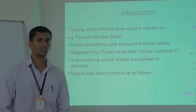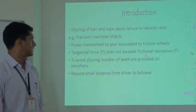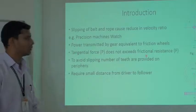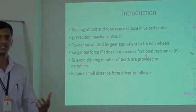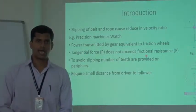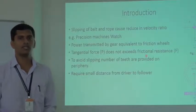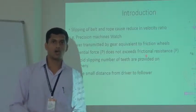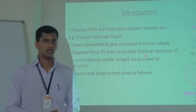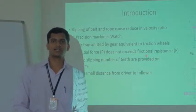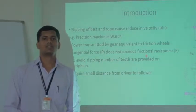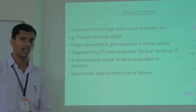First of all, Introduction of Gears. We are going to use gears because slipping of belts and ropes causes reduction in velocity ratio. For example, if we are moving in a vehicle and after acceleration our automobile starts slipping, that will cause loss in human life or loss in properties. Similarly, in precision machines like watches, that slipping causes too much loss — that is what we have to avoid.